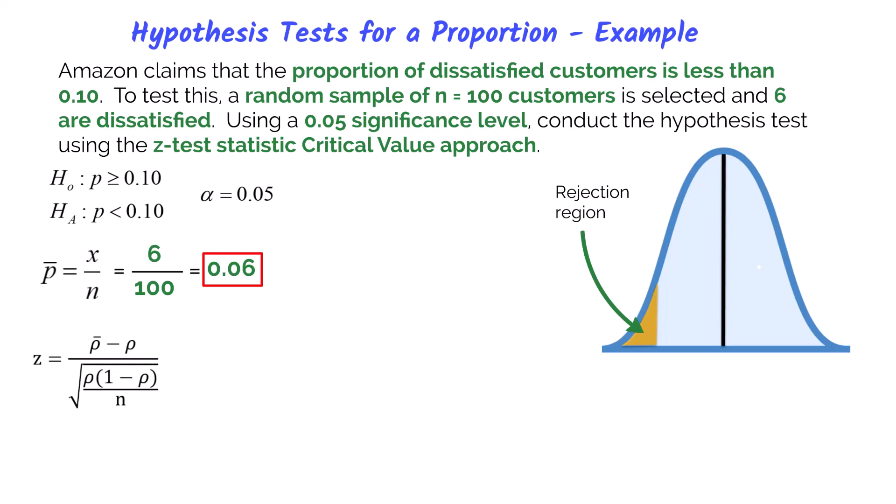We will use the critical value approach. Using Excel's norm.s.inv function with an input of 0.05, since this is a one-tailed lower test, the critical value is negative 1.645. Recall, the Z critical value will be negative for a lower-tailed test. This is the cutoff point for the rejection region.